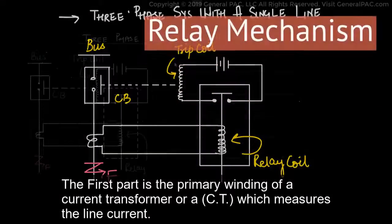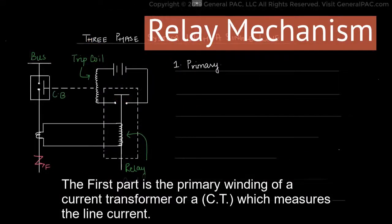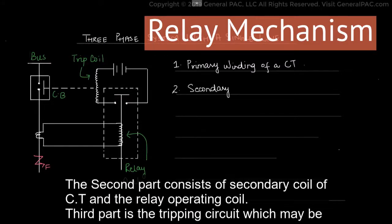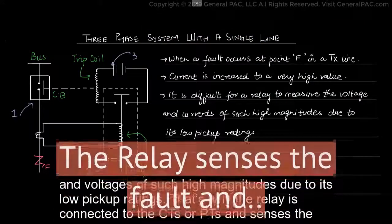The first part is the primary winding of the current transformer or CT, which measures the line current. The second part consists of a secondary coil of the CT, and the relay is connected to CTs or PTs.